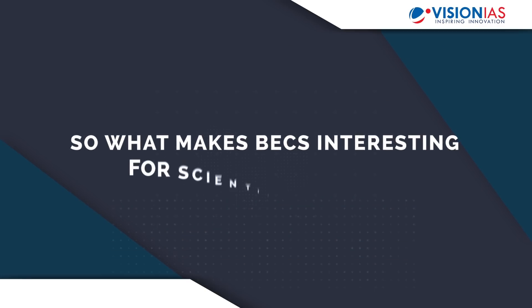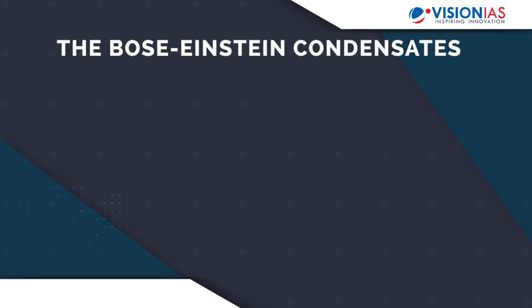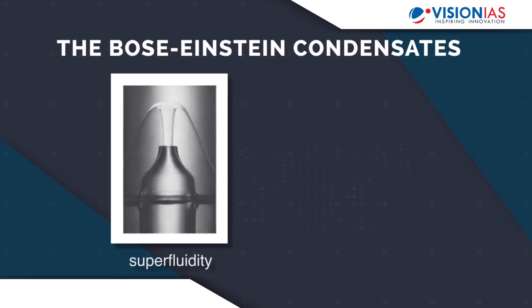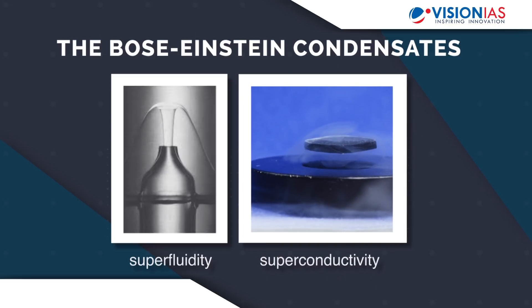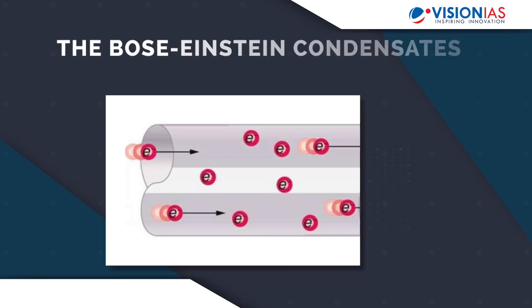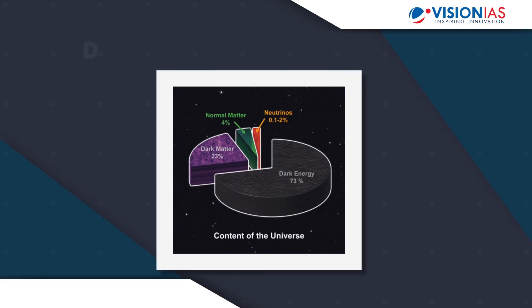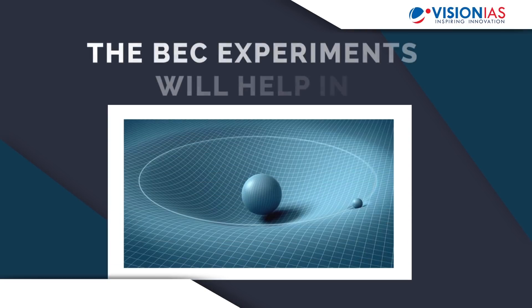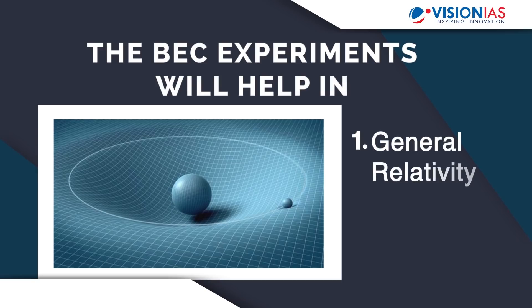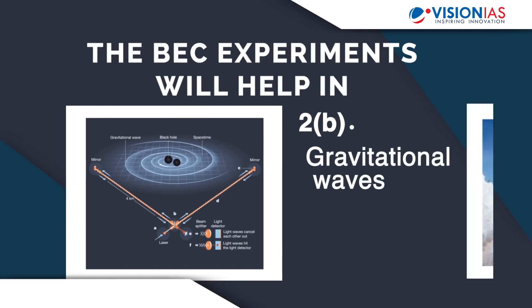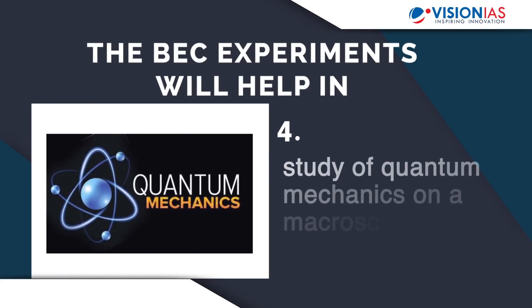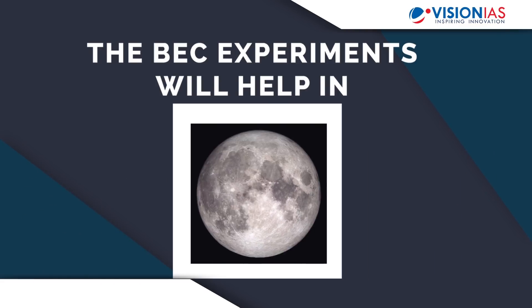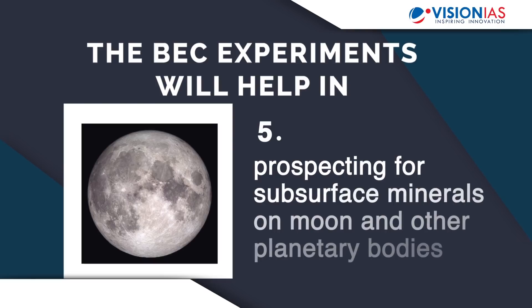Bose-Einstein condensates are related to two remarkable low-temperature phenomena. The first is superfluidity, in which the condensates flow with zero friction, and the second is superconductivity, in which electrons move through a material with zero electrical resistance. Experts also believe that Bose-Einstein condensates contain vital clues to mysterious phenomena such as dark energy. The experiments on the ISS will help in tests of general relativity, searches for dark energy and gravitational waves, better navigation of spacecraft, study of quantum mechanics on a macroscopic level, and prospecting for subsurface minerals on the Moon and other planetary bodies.